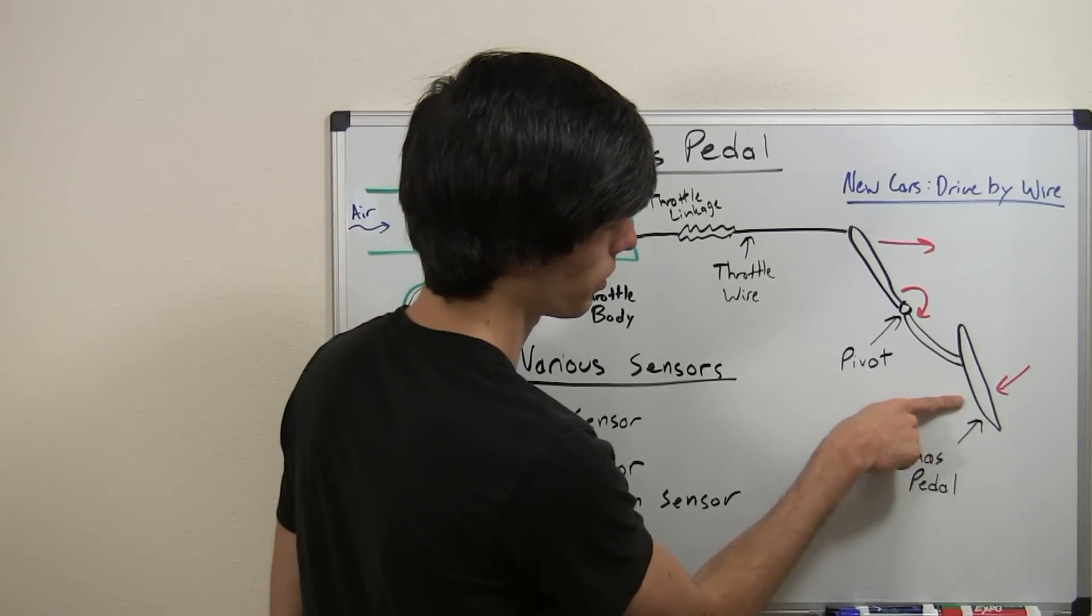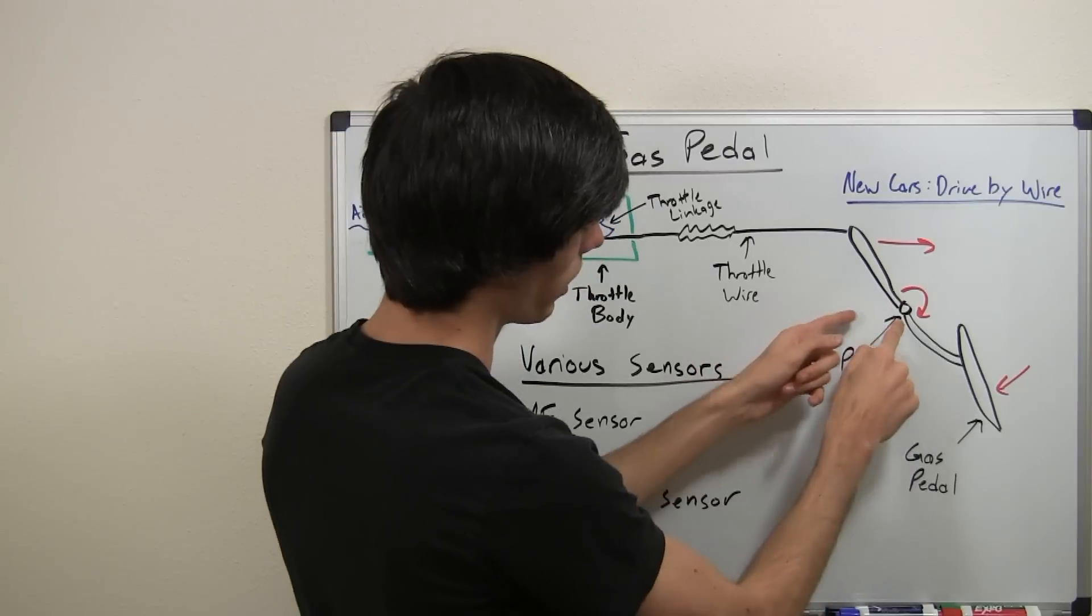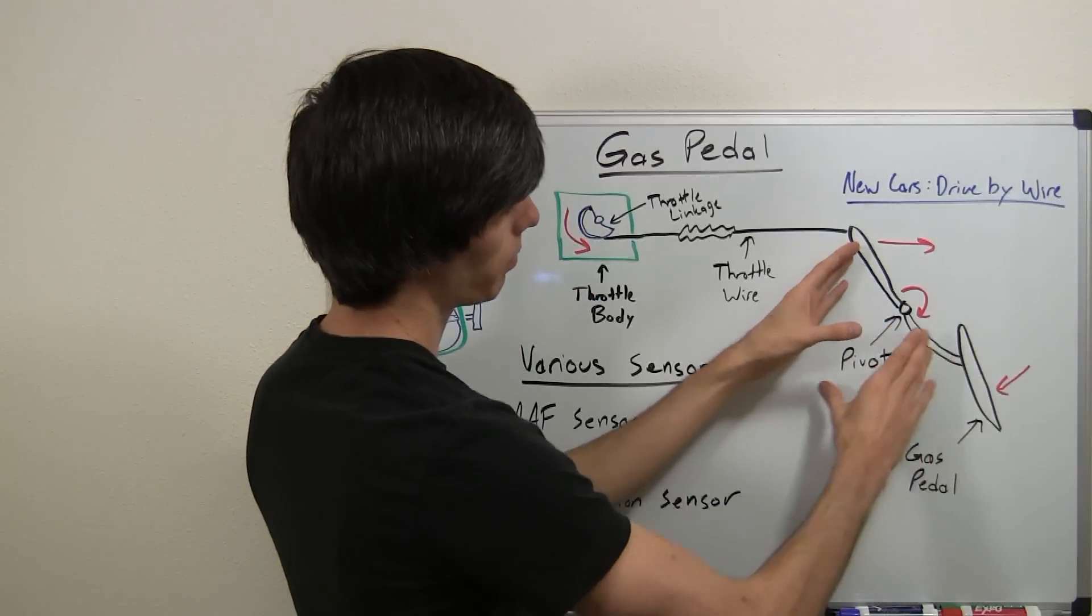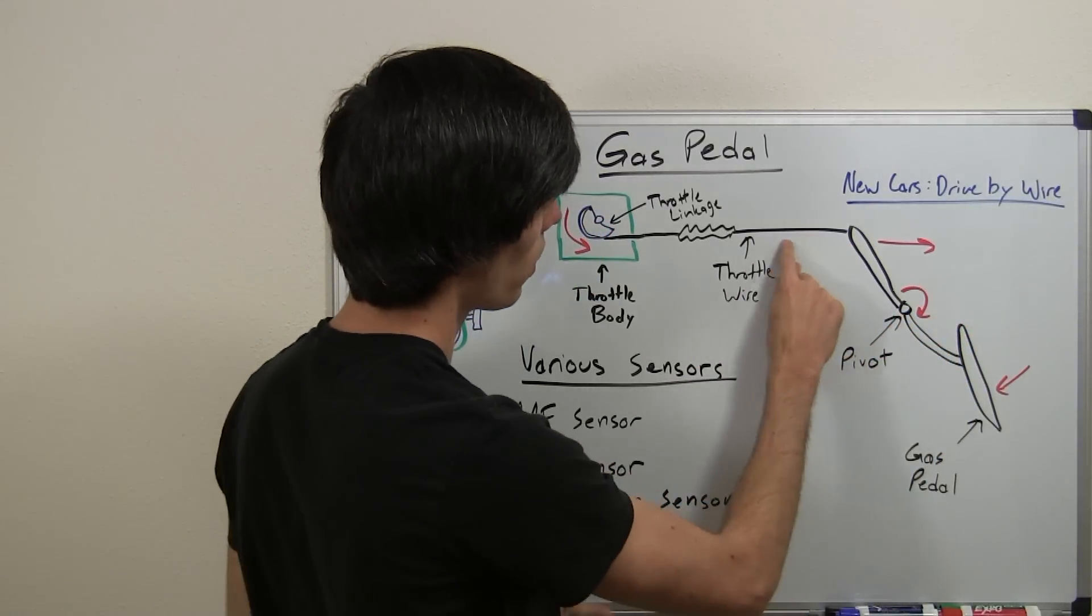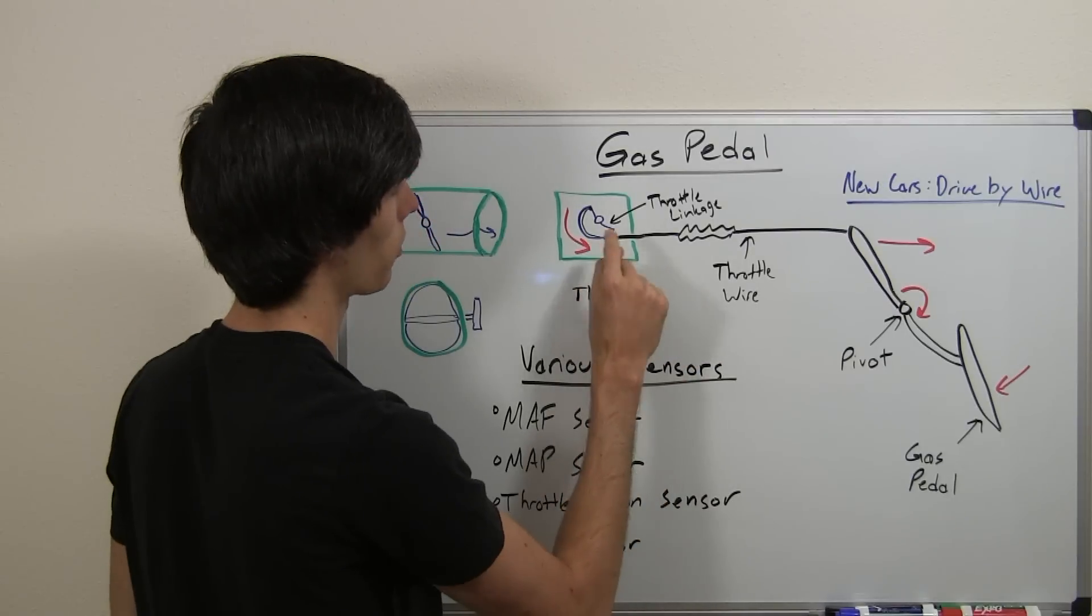So this is what you're going to push your foot on here. Here's the gas pedal and as you push that you've got a pivot, so you're going to push in and that pivot is going to pull on a wire, the throttle wire, and that throttle wire is connected to the throttle linkage.